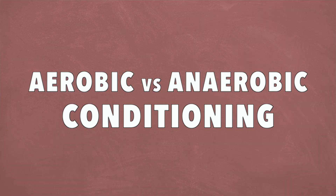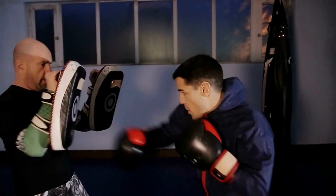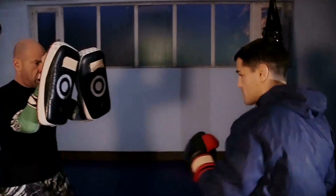Hey, what's up guys, it's Matt with Movement System. In this video we're going to talk about aerobic versus anaerobic conditioning. A lot of the information for this video comes from the book Ultimate MMA Conditioning by Joel Jamison. I think this is a really good book for learning the principles of conditioning, not just for MMA athletes, but as it applies to a bunch of different athletes and generally developing energy systems.